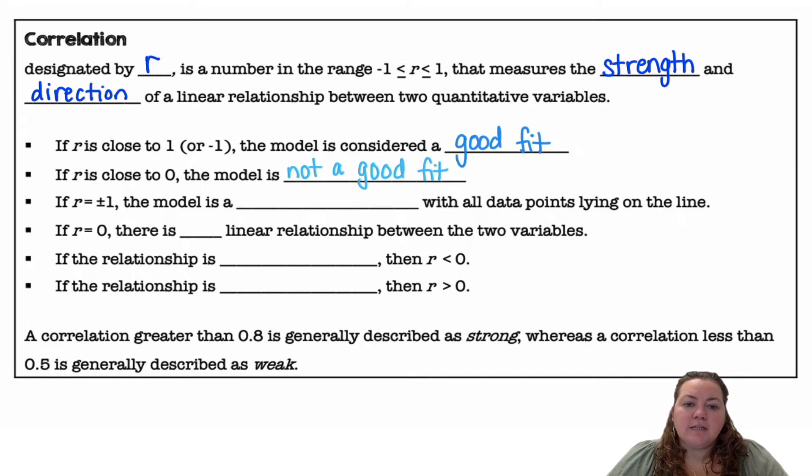If R is equal to exactly positive or negative 1, then the model is a perfect fit with all data points lying on the line. If R equals 0, there is no linear relationship between the two variables.